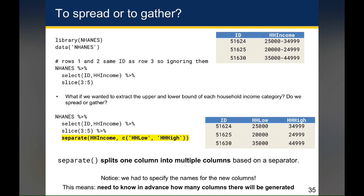So if you've started with NHANES, selected the ID and the household income variable, sliced just the third to the fifth row such that there's three rows, the way you would then do it is to use the separate function. And the first argument in the separate function is the variable that you want to act on, that you actually want to separate.